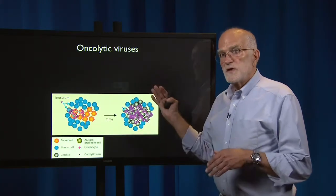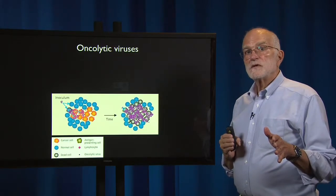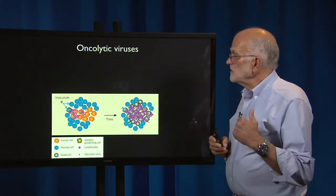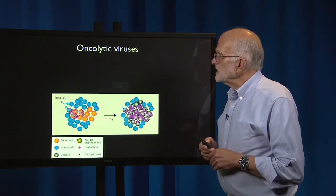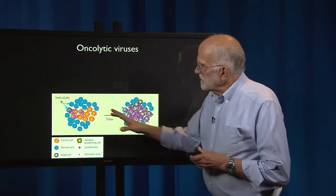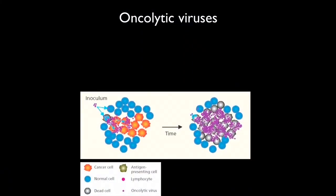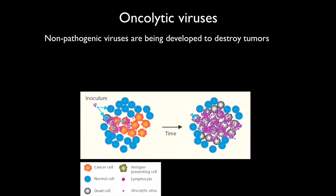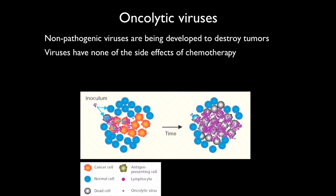The use of phage for therapy against bacterial infections also reminds us that phage can be used to attack cancer. There are some oncolytic viruses — the idea is that you have an inoculum of virus that targets cancer cells living among normal cells, leaving the normal cells unaffected. Non-pathogenic viruses are being developed for this kind of therapy; they have none of the side effects of chemotherapy, and mouse studies are very promising.